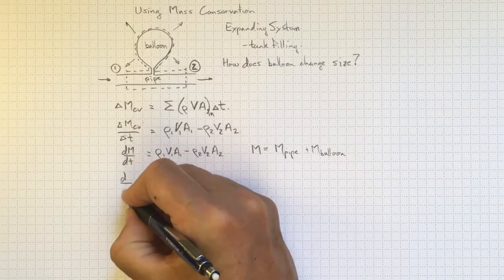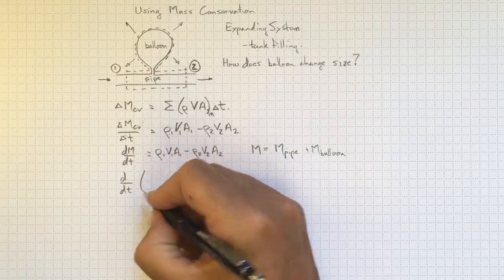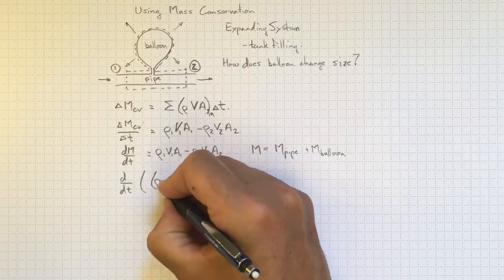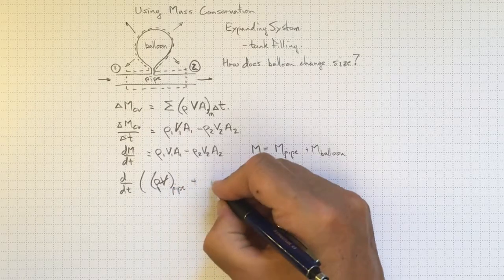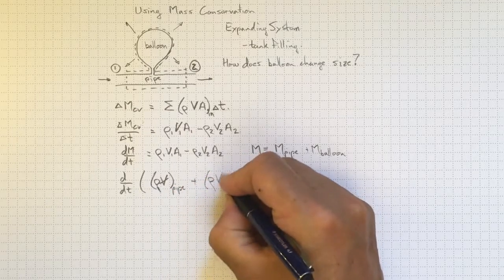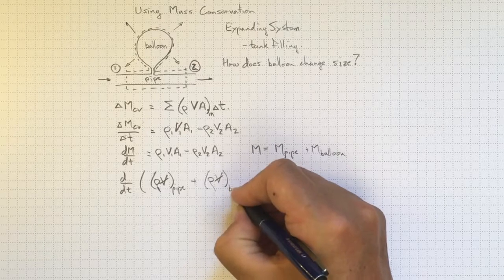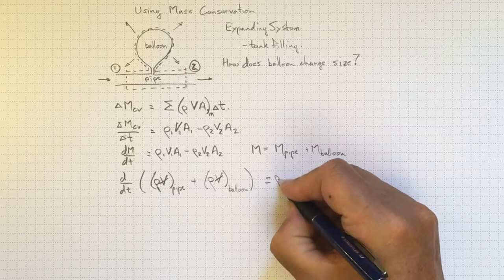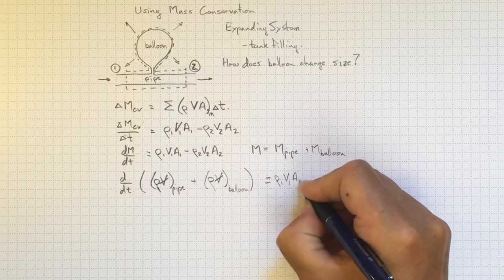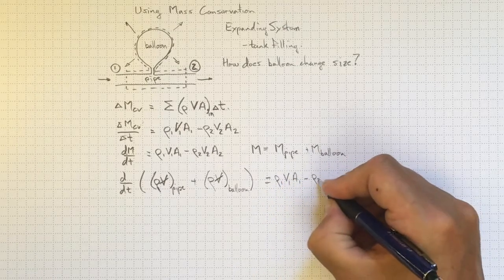Rate of change with time of density times volume within the pipe, that's the mass in the pipe, plus density times volume in the balloon, that's the total mass within the balloon, must be equal to rho_1 V_1 A_1 minus rho_2 V_2 A_2.